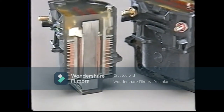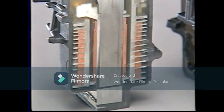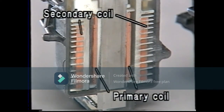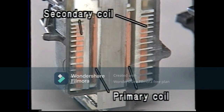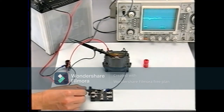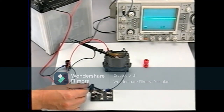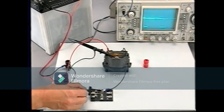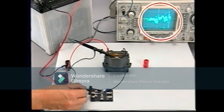An ignition coil integrates these two coils into one. Let's conduct a test with an actual ignition coil. The current flowing in the primary coil is turned on and off. As you can see, the ignition coil uses the self-induction and mutual induction effects to generate a high electromotive force of tens of thousands of volts from the 12-volt power source.